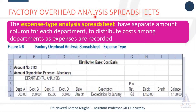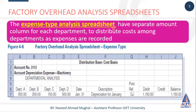So factory overhead analysis sheets kya ho sakti hain? Pahli jo sheet hoti hai woh expense type analysis sheet hoti hai. There are two types of overhead analysis spreadsheets. Number one is expense type analysis spreadsheet.